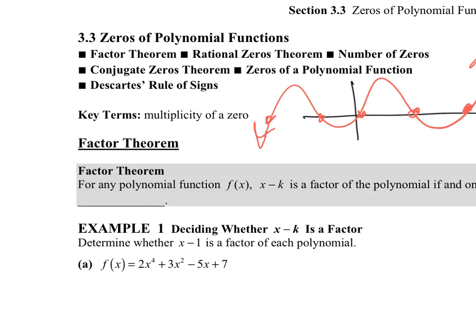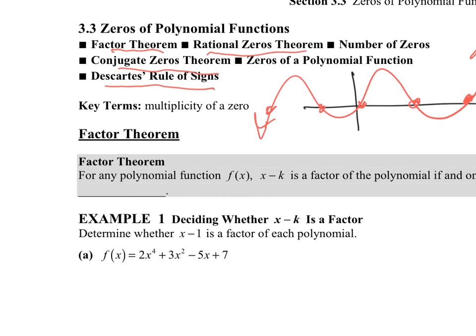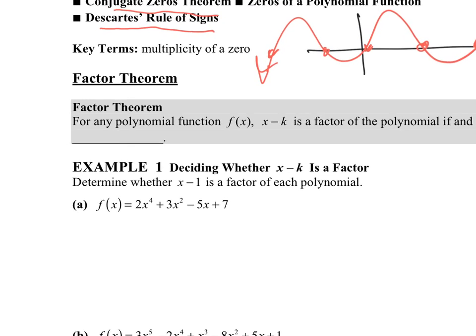We're going to learn some theorems today. One is called the factor theorem, one is called the rational zeros theorem, one is called the conjugate zeros theorem, and then Descartes' rule of signs — it's actually kind of a theorem but it's just a rule that René Descartes came up with. Let's start with the factor theorem.